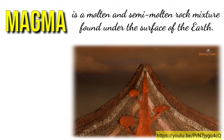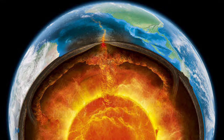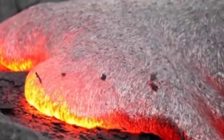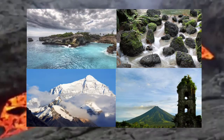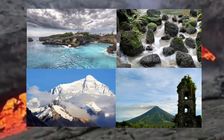Magma that has cooled into a solid is called igneous rock. Magma is extremely hot, between 700 degrees and 1,300 degrees Celsius. This heat makes magma a very fluid and dynamic substance, able to create new landforms and engage physical and chemical transformations in a variety of different environments.